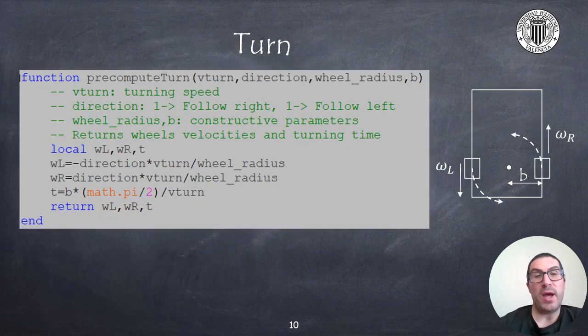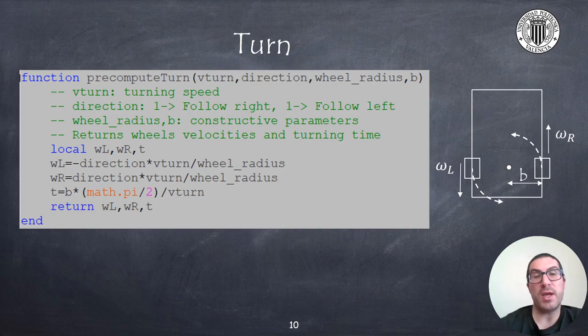Then we have the precompute turn function. This function allows you to pre-calculate or pre-compute some angular speeds needed on each of the wheels in order to perform a 90 degrees turn, and it will also return the minimum time necessary to perform this turn. Indeed, this function is identical to the turning function that was already explained in the videos for solving mazes with proximity sensors. It's actually used when the robot detects the wall in front of it. When we are in state two to make a turn, we have to call this function.